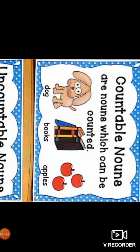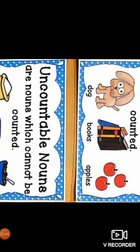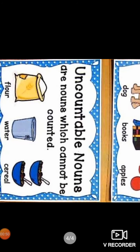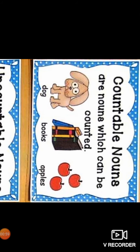As you can see in the picture, countable nouns are nouns which can be counted, like a dog, books, apples, and many other things. Uncountable nouns are nouns which cannot be counted, like flour, water, cereals, and many other things. So this is the definition of countable and uncountable nouns.